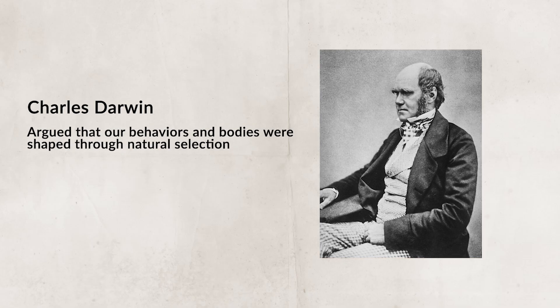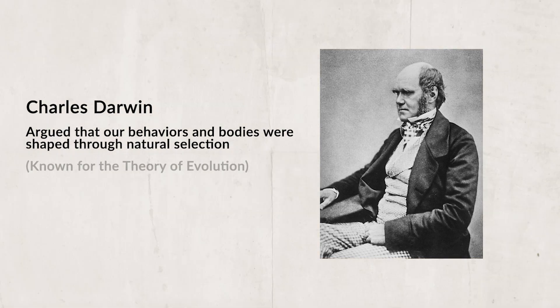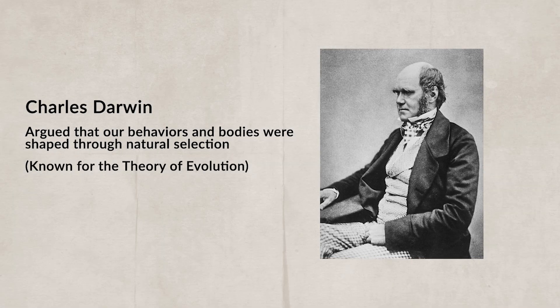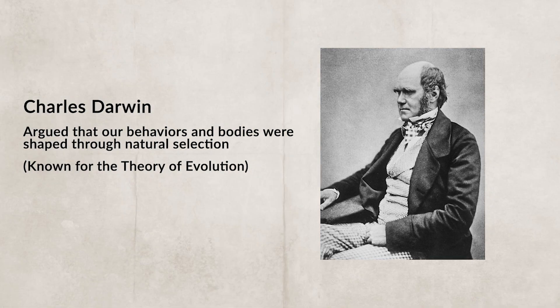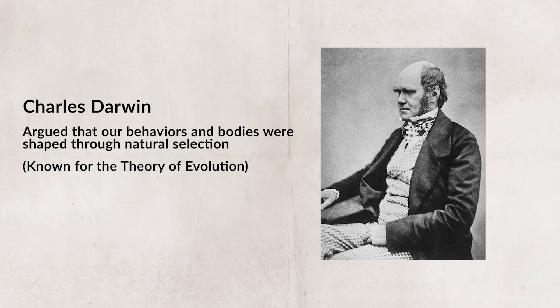If we go back to our Unit 1 Topic 1 video, we can see that Charles Darwin would actually be a proponent of nature over nurture. Charles Darwin was not a psychologist — in fact his book, The Origin of Species, was published well before the first psychology lab was created by William Wundt. We talk about Darwin in psychology because of the contributions he made in the area of heredity and environment.